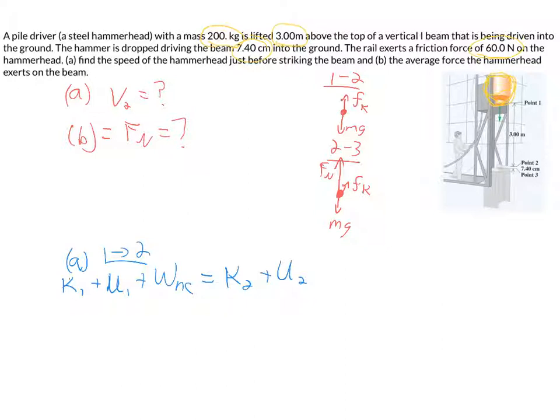For this whole problem, what we're going to need to do is really define a zero point in our picture here. So what I'm going to do is I'm going to call the top of the beam zero. So when we're looking at potential energy at point 2, there's no gravitational potential energy since we're calling that height zero. So now let's break it down.